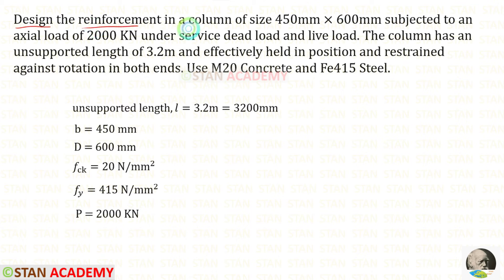Design the reinforcement in a column of size 450 millimeter into 600 millimeter. Let us keep the small side as B and the bigger side as D. Subjected to an axial load of 2000 kN under service dead load and live load. So the load P is given as 2000 kN. The column has an unsupported length of 3.2 meter and effectively held in position and restrained against rotation in both ends.